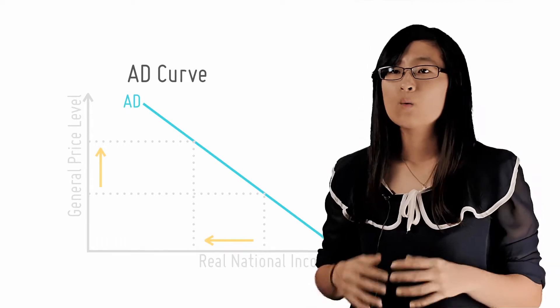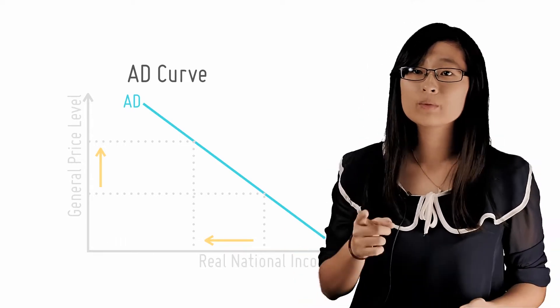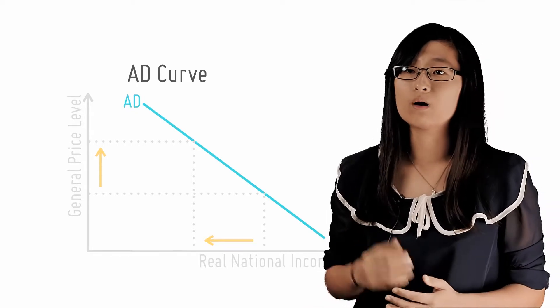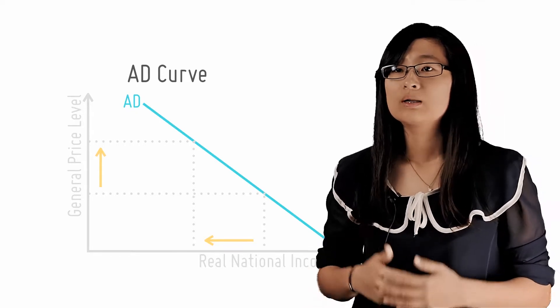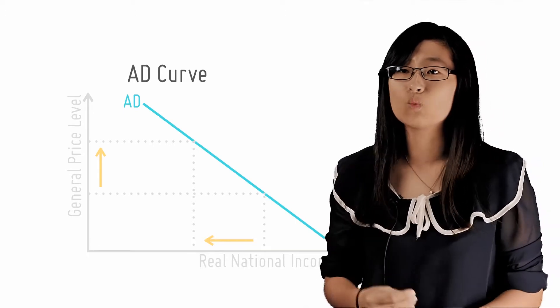The most obvious one is that when the sticker price of all goods and services in the economy increases, your ability to buy things or your purchasing power falls. Your $100 now buys less, which discourages you from buying as much as you would have otherwise wanted.